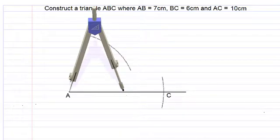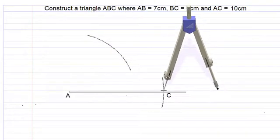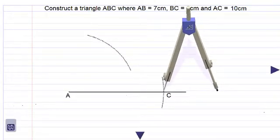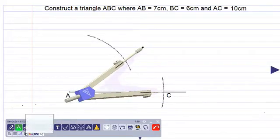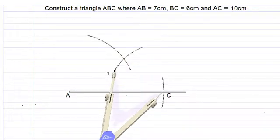We then move the point, move the compass and place the point at point C. Swing the compass around and draw another construction arc as shown using our light pencil.